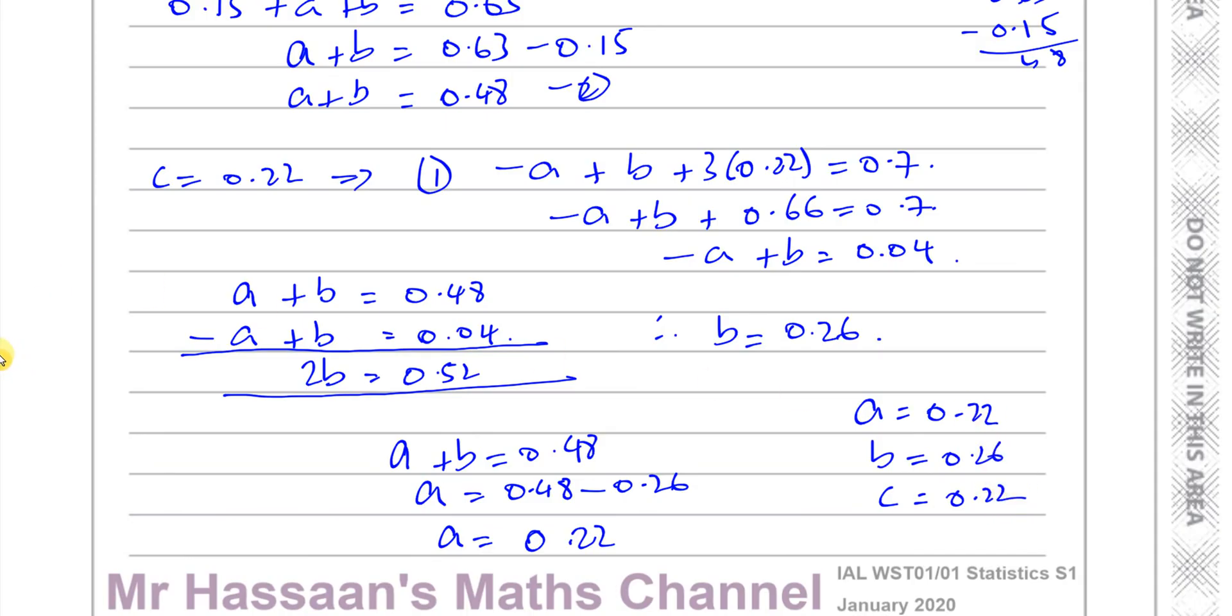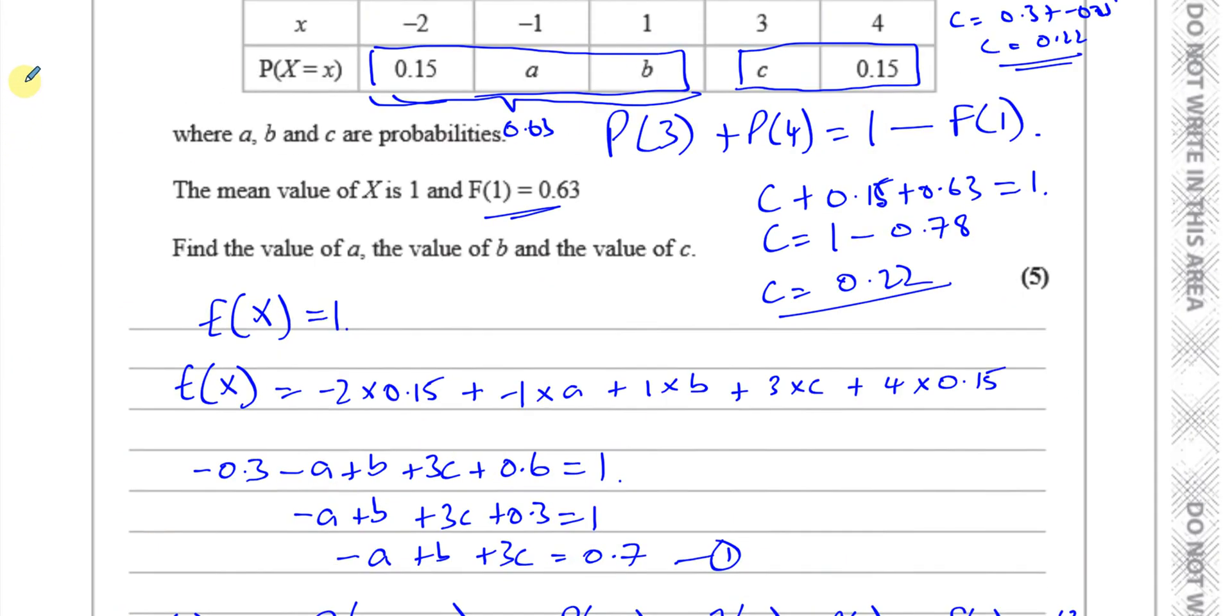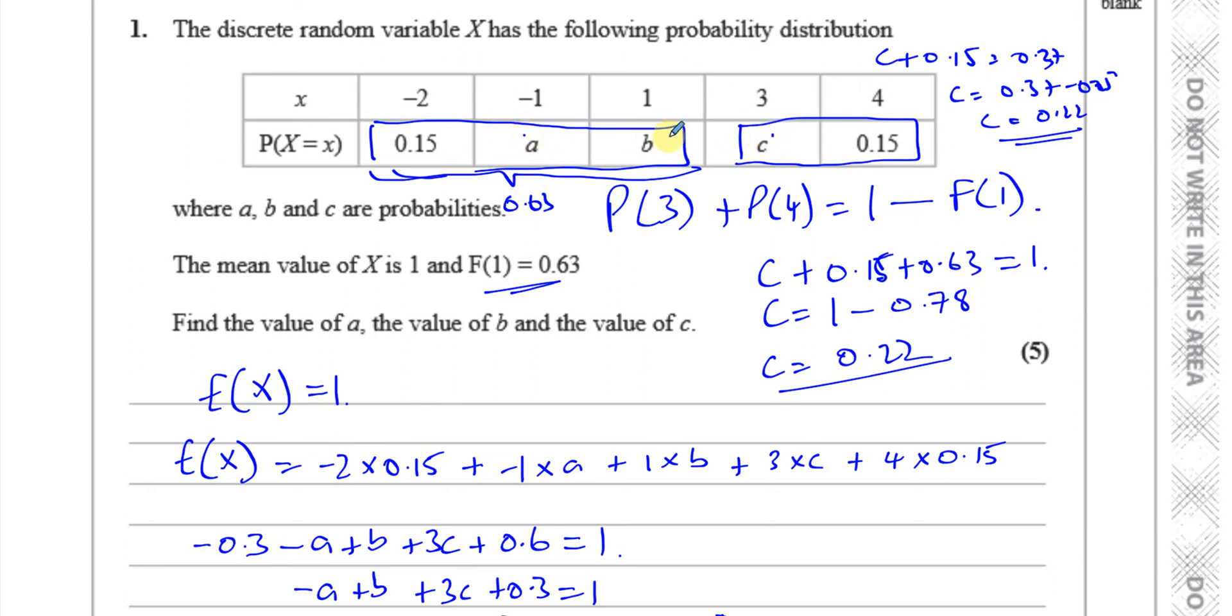So we have A is 0.22, B is 0.26, and C is 0.22. So it's kind of symmetrical. It's like a symmetrical distribution: 0.22, 0.22, 0.26, 0.15, 0.15. There we have the answer to question number one.